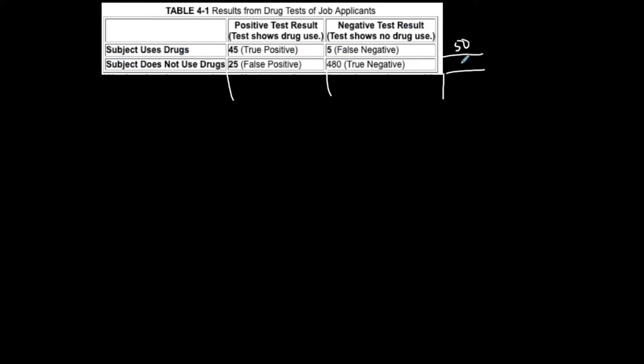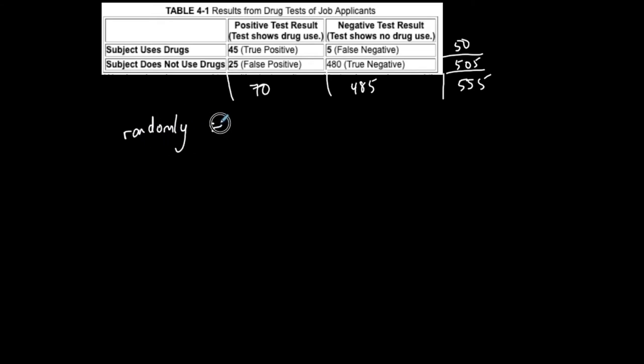A nice way to visualize this is with a table. We have 50 total subjects that use, and 505 total subjects that do not use, for 555 total people. There are 485 that had a negative test result and 70 that had a positive test result.